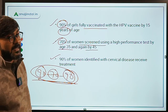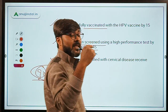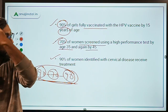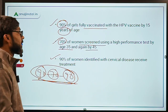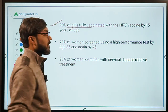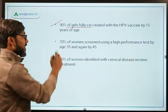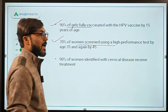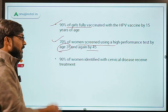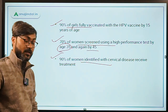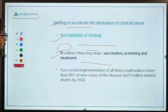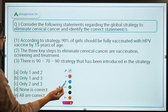Do not confuse this with the 90-90-90 strategy of HIV-AIDS in India — that is something different. This is the 90-70-90 strategy of the WHO to prevent cervical cancer. Remember: 90% of girls vaccinated with HPV by age 15, 70% of women screened by age 35 and 45, and 90% of women identified with cervical cancer receive treatment.